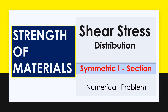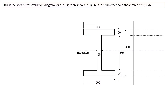In this lecture you are going to learn how to draw the shear stress distribution curve — shear stress distribution diagram — for a symmetric I section as well as unsymmetric I section. The statement is to draw the shear stress variation diagram for the I section as shown in the figure, which is a symmetric type of I section.